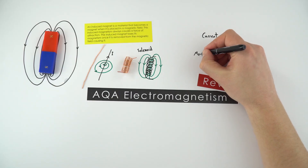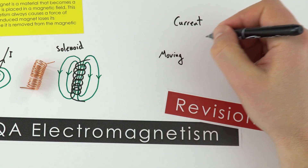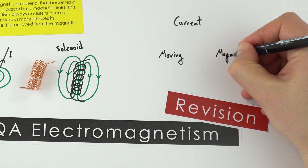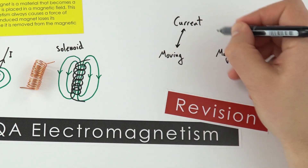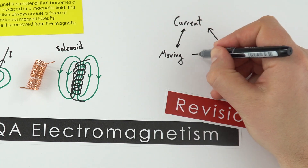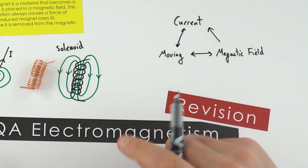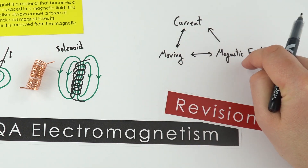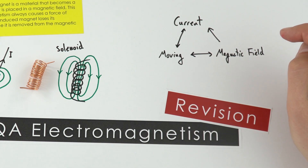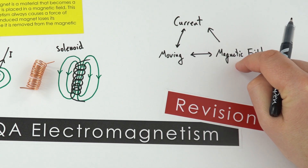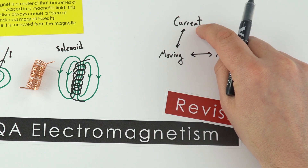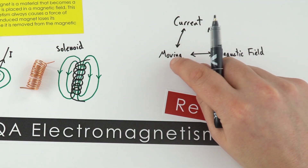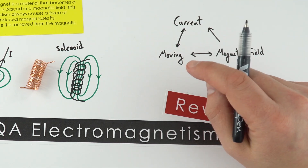When you have a current moving, this causes there to be a magnetic field, and these three things are really closely linked. You have a current flowing — a movement of electrons inside a wire — and you cause a magnetic field. But what would happen if you had a magnetic field and a current flowed in it? You then get the third side of the triangle: you get movement. And this is called the motor effect.